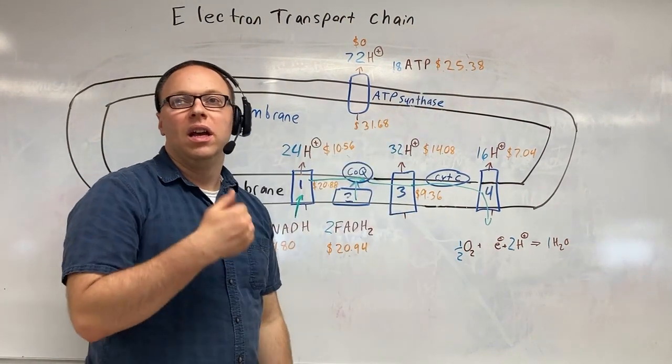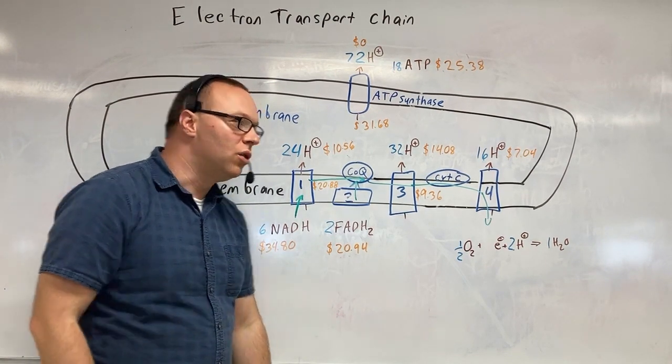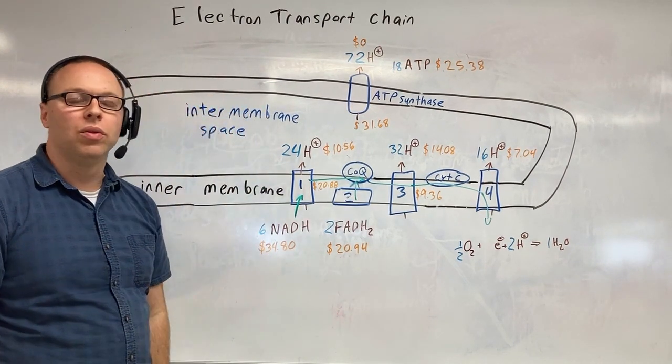So the overall efficiency of breaking down sugar aerobically with that oxygen is only about 43%. Most of that is actually coming right here in this electron transport chain. And so, very powerful tool that we have here.